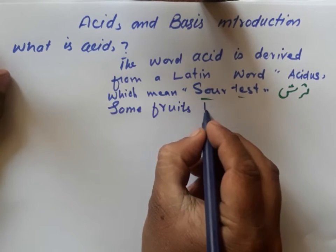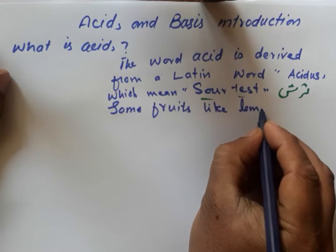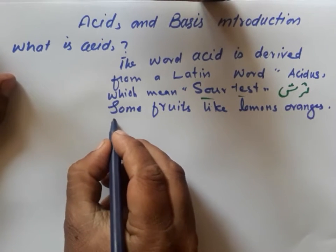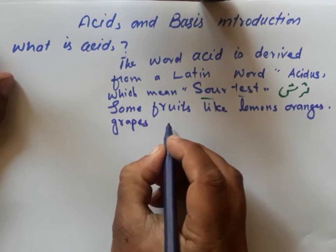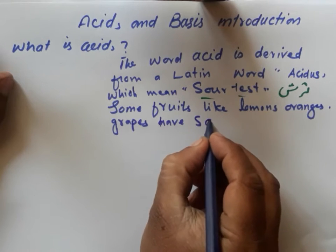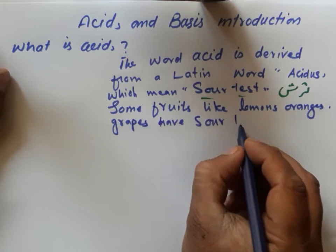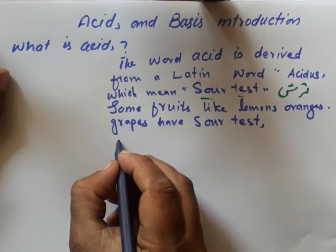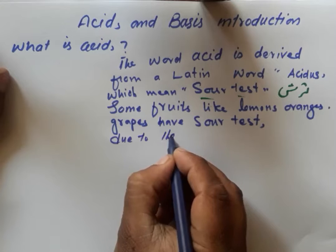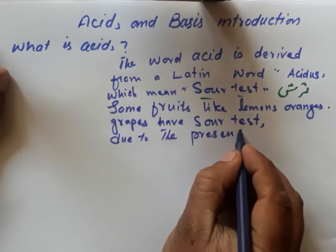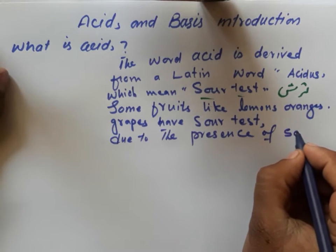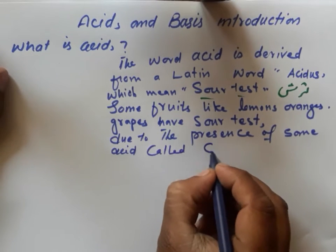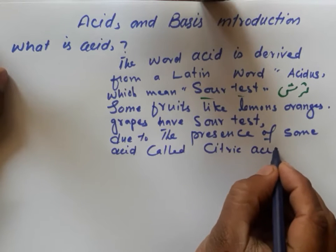Some fruits like lemon, orange, and grapes have a sour taste. Why? Because of the presence of some acids — called citric acid.